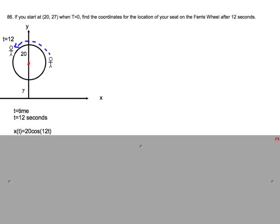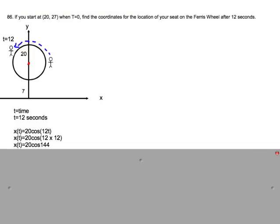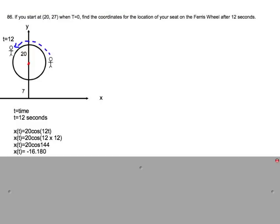You would use the X equation 20 cosine 12t from the previous problem and plug in 12 seconds for t. So we have that 20 cosine 12 times 12 turns out to be negative 16.180. This is your X coordinate.